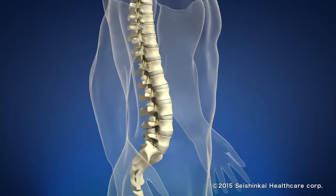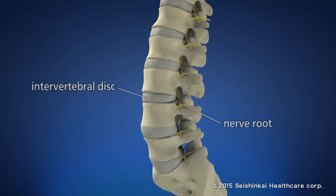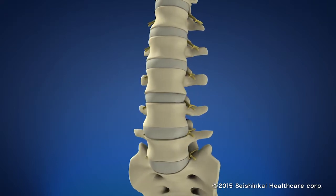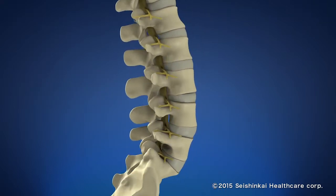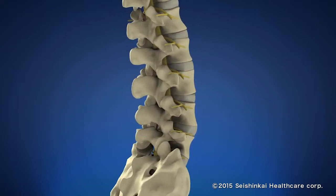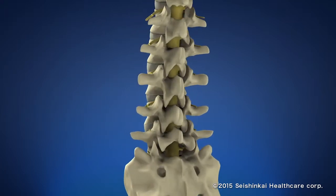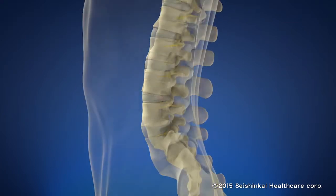There is tissue called the intervertebral disc that lies in between the backbone. It protrudes due to aging and various external forces, compressing nerve roots and the spinal cord. Therefore, lower back pain and numbness of the legs are often caused.